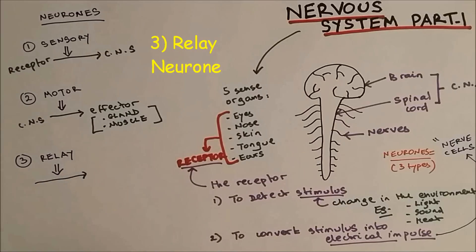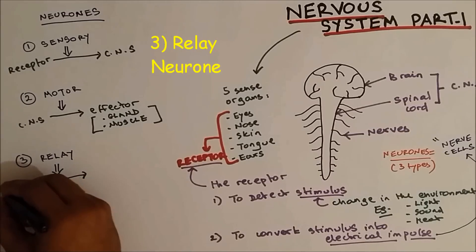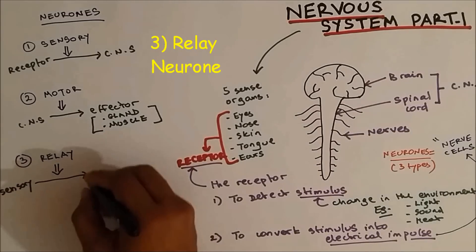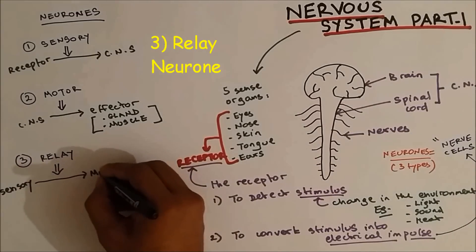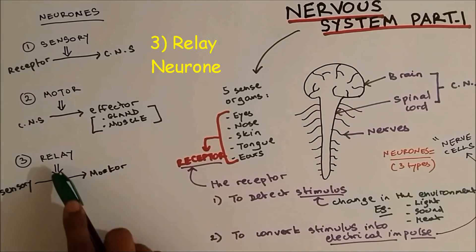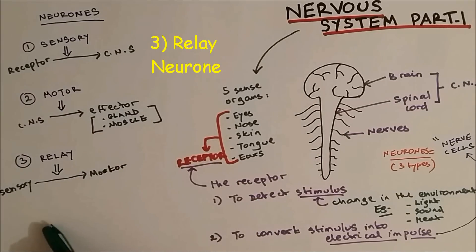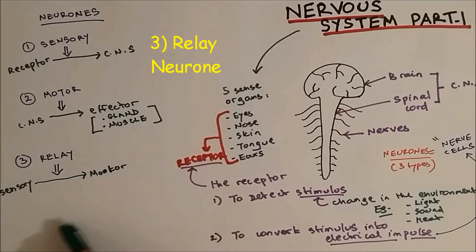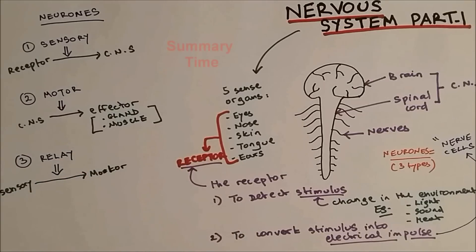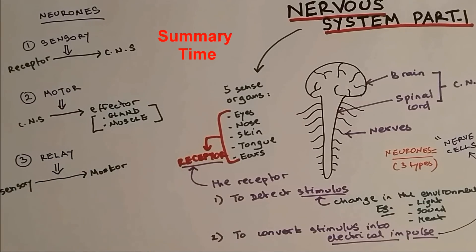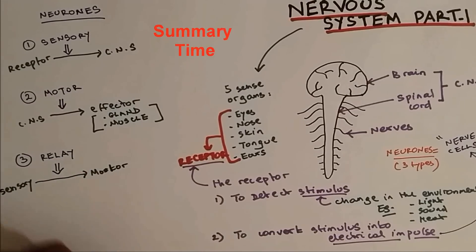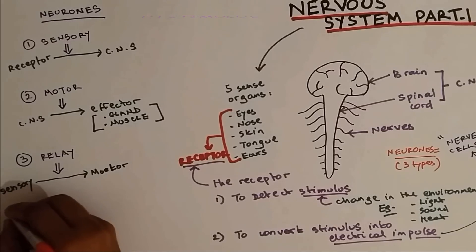The relay neuron transmits electrical impulse from the sensory to the motor neuron, so relay neurons connect the sensory neuron to the motor neurons, and are found inside the spinal cord.